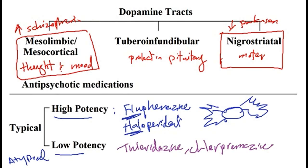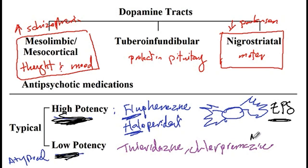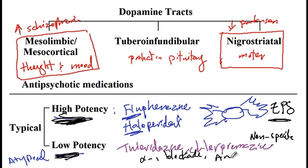The side effects of these medications include extrapyramidal side effects as well as nonspecific effects. High potency medications are mainly associated with extrapyramidal side effects. Low potency medications are mainly associated with nonspecific side effects, such as alpha-1 blockade, which causes orthostatic hypotension, as well as antimuscarinic effects, which causes dry mouth.